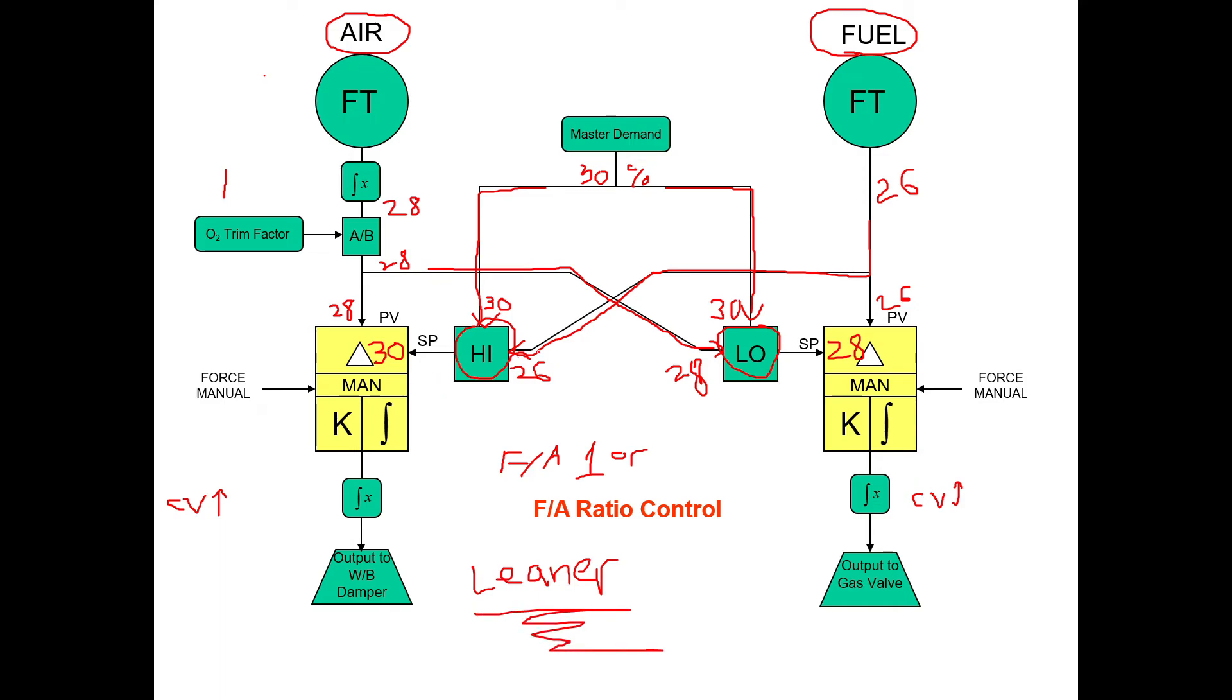Now what will happen is you have to have some sort of dead band. And the reason being is if you don't have a dead band, then the fuel and air control will fight themselves. So what we do is we give the cross limiting action a two percent dead band on air and fuel.